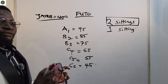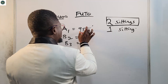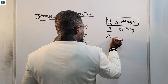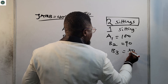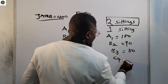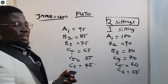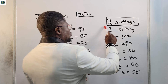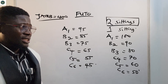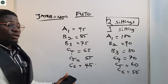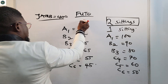For two sittings, the O-level grade points are: A1 = 95, B2 = 85, B3 = 75, C4 = 65, C5 = 55, C6 = 45. If you have your results in one sitting, you get a bonus of 5 points each: A1 = 100, B2 = 90, B3 = 80, C4 = 70, C5 = 60, C6 = 50. After grading your five relevant subjects, you add all the points together and multiply by 0.1.